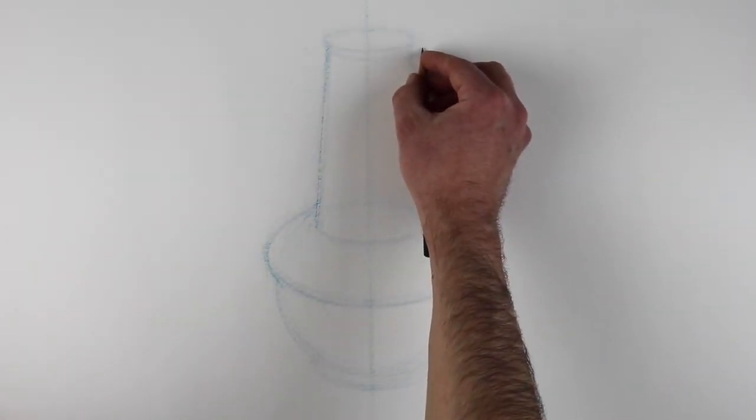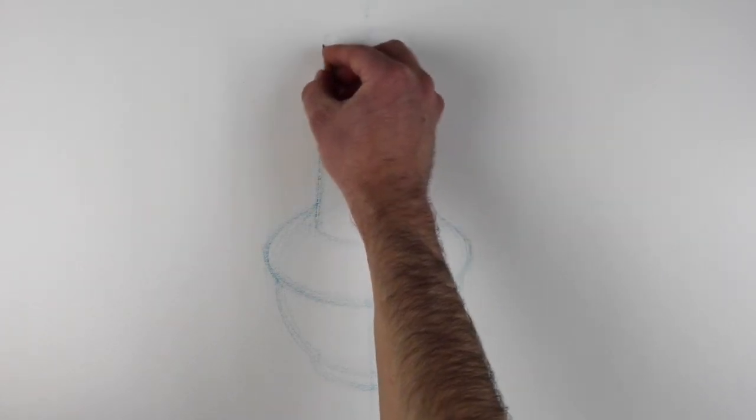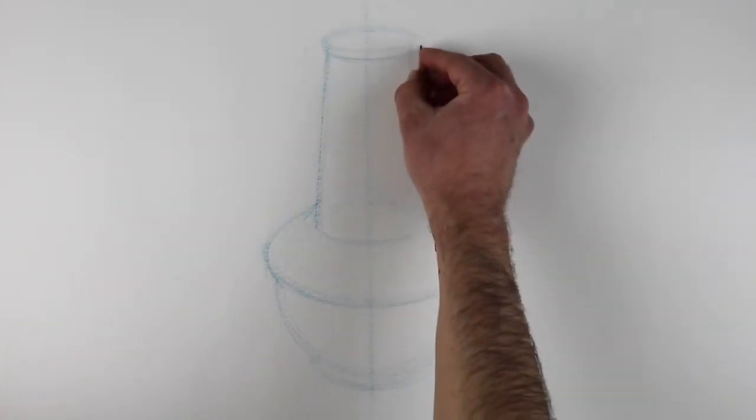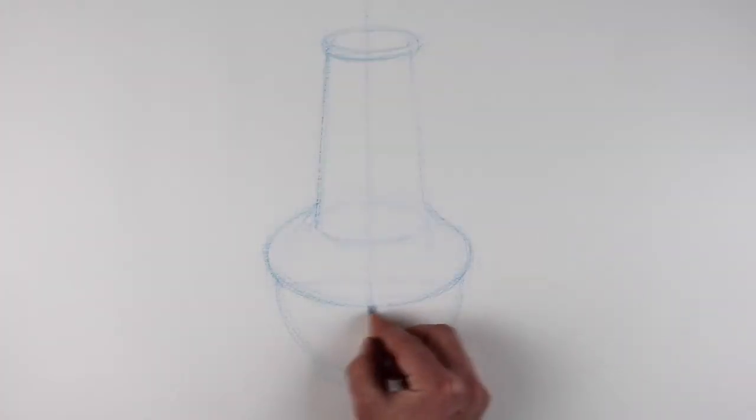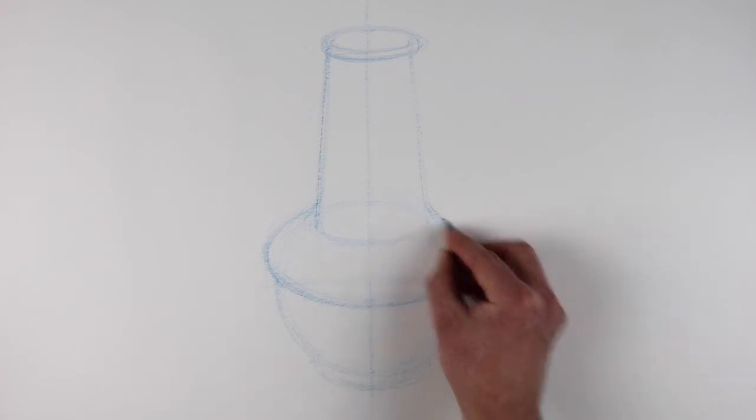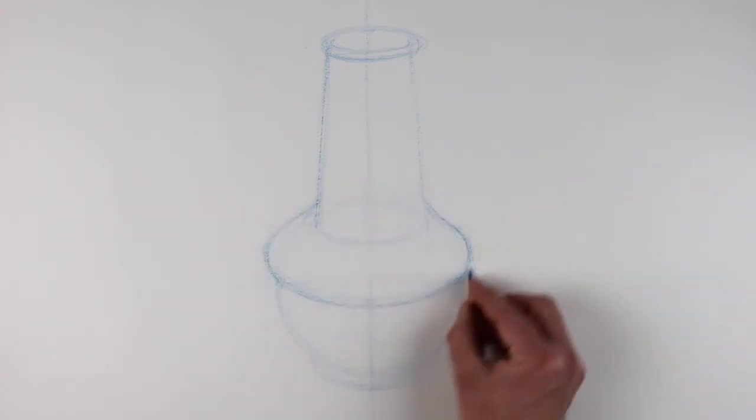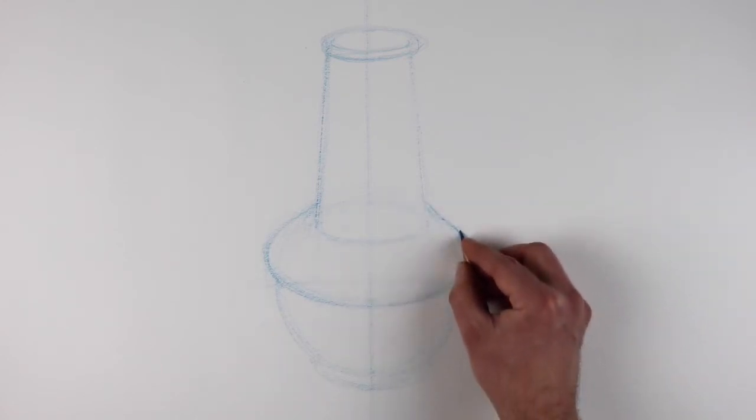Next, you'll see me start to draw the ellipses that make up the rim at the top of our subject. Keep in mind that for today, we're editing out most of the details and focusing on the basic volumes that make up the object. Later on this week, you'll learn more about how to draw handles and rims on subjects like this. But until then, try and keep your drawing simple and structural.